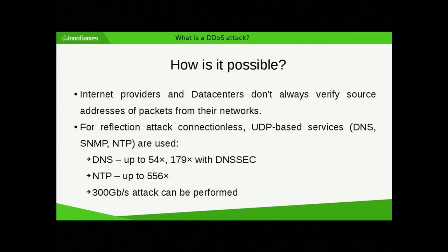How is this possible? Internet providers and data centers do not verify the source address of packets coming from their networks. I tested it with one of the German providers — I was sending packets with fake source IPs, and some of those packets were in fact reaching my network. For NTP, the attack works by sending one UDP frame and asking the NTP server for its client list; the NTP server sends up to 500 times more data back. You can do the same with DNS, and with DNSSEC you can get even more amplification — potentially reaching 400 gigabits or so.